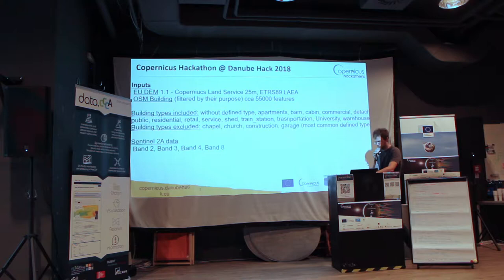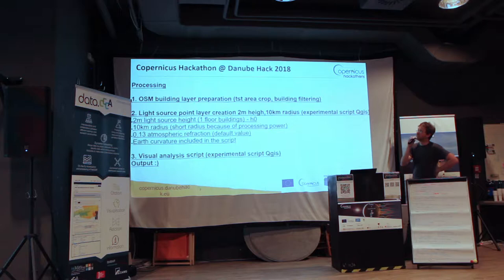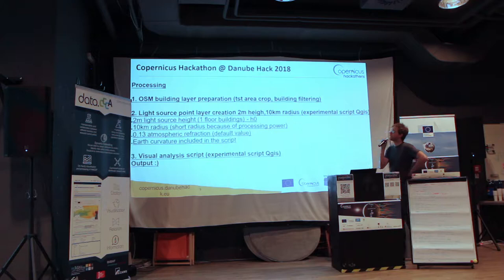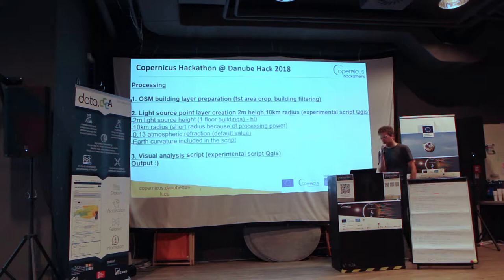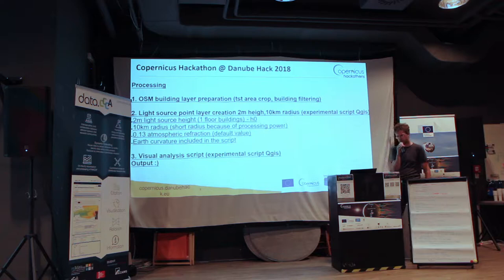I tried to process the data to get some outputs. The processing looked like: I took the OSM building layer and prepared the area. First I tried to work on the server — it would be perfect but I didn't manage to run the Python script on it, and I also had a problem with the data. So I had to switch to my desktop and work there in QuantumGIS. I had to prepare the data, crop them, filter the data, and then I used the first script to define the light sources.